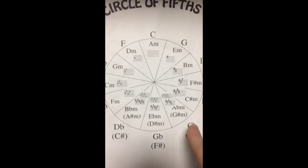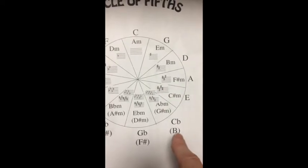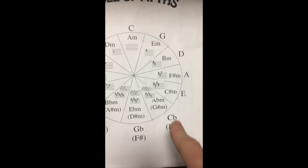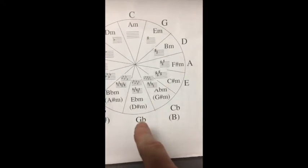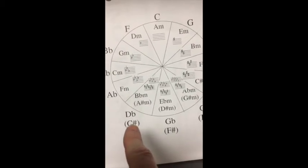Notice these keys down here—these are enharmonic keys. The key of C flat, seven flats, sounds exactly like the key of B, five sharps. Those guys are enharmonic equivalents of each other, note-wise and key-wise too. The key of G flat sounds just like the key of F sharp, and the key of D flat sounds just like the key of C sharp.